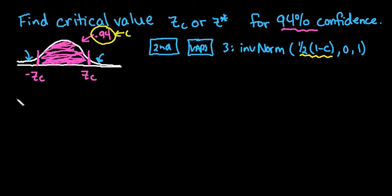The reason we do that is because the area in the tail is equal to 1 minus 0.94, which is 0.06. And half of it's here, so 0.03 is here and 0.03 is here. So we would divide this in half to get the area in each tail.